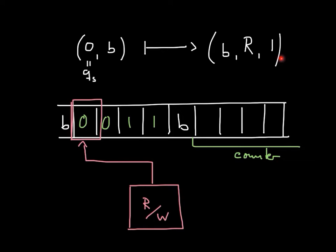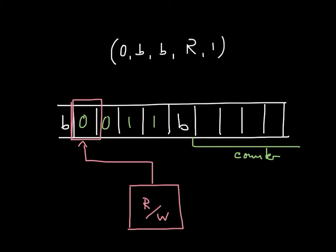After executing this instruction, our Turing machine would be in state 1 and pointed one cell to the right of the initial cell. To make notation easier, I'll write a quintuple collecting all the information in a single vector. The information remains the same: if in state 0, reading blank, put a blank there, go right, and go into state 1.